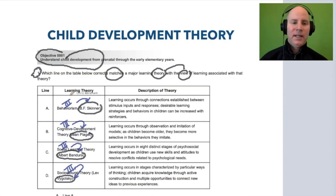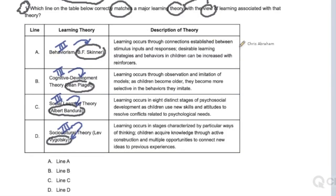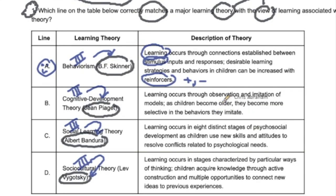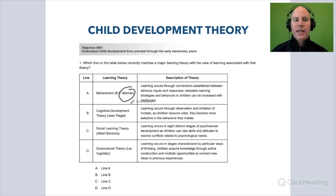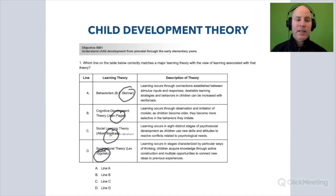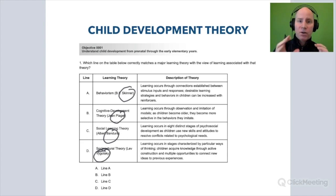All these ideas connected to just one question. Looking at choice A — Skinner — the scenario has to do with learning that occurs through stimulus of reinforcers, or positive and negative reinforcement. A is the correct answer, referring to behaviorism and learning through positive and negative reinforcements in the environment. Another choice involves observations, imitation, and modeling — that's Bandura, not Piaget. Make sure you study all the choices, because the question could just as well have been about Vygotsky's social interaction or Piaget's interaction with the environment. They're all important — know them for the early childhood theory piece.